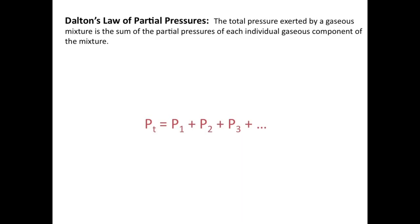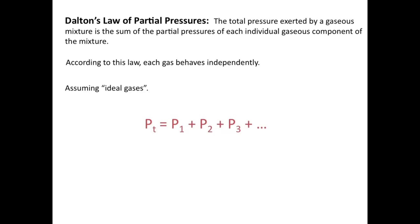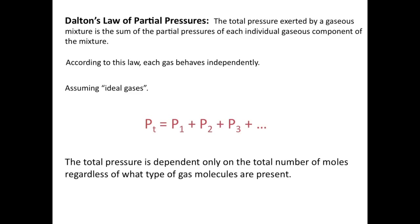Dalton's Law states that the total pressure exerted by a gaseous mixture is the sum of the partial pressures of each individual gaseous component. So the total pressure, P sub T, is equal to the individual partial pressures of whatever gases compose that mixture. Each gas behaves independently, assuming ideal gases. This law also tells us that the total pressure is dependent only on the total number of moles present, regardless of what types of gas molecules are present.